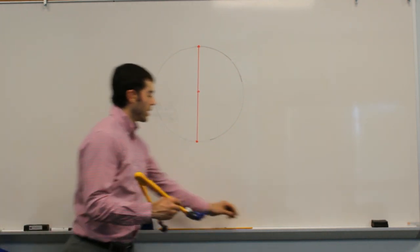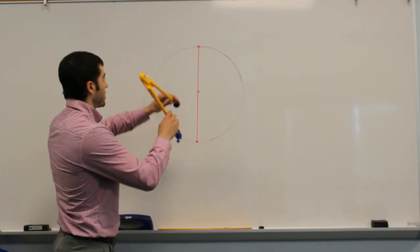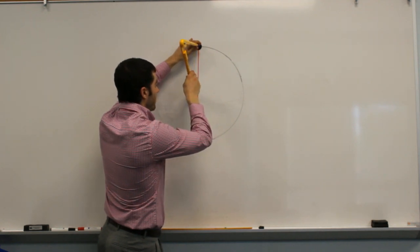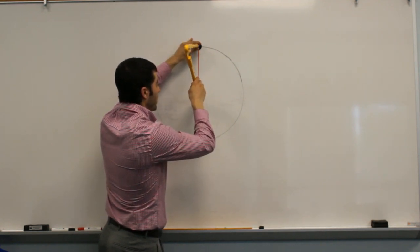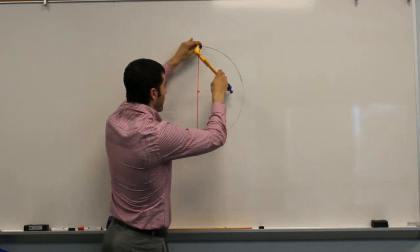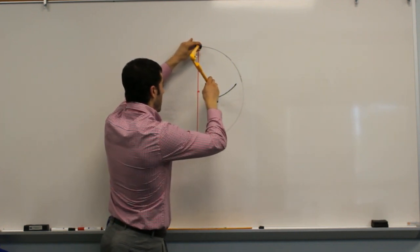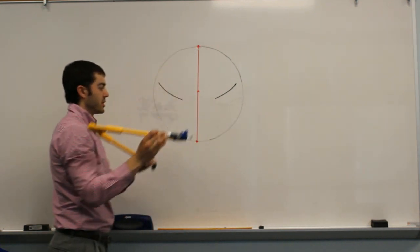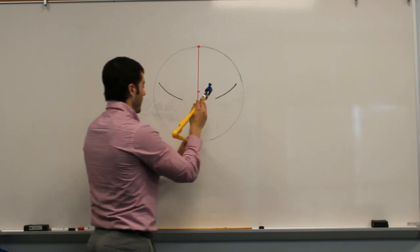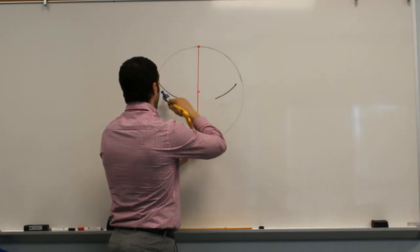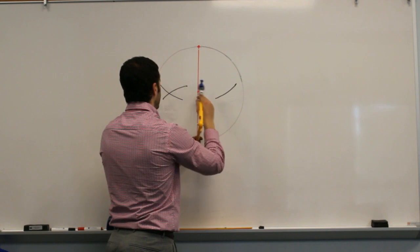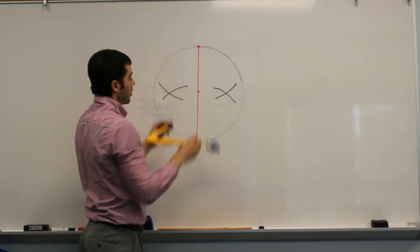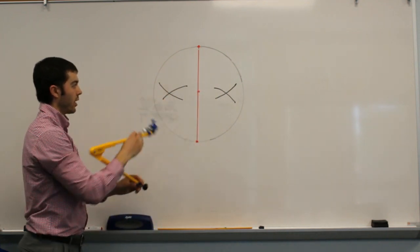We can use our compass, following the process for constructing a perpendicular bisector. We open our compass up to a width that's more than half of the length of the diameter, and we're going to draw one arc above and one arc on the other side. We do the same thing from the opposite end of the line segment, keeping our compass the same width when we did each of these arcs.